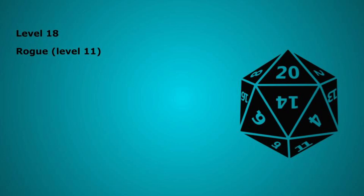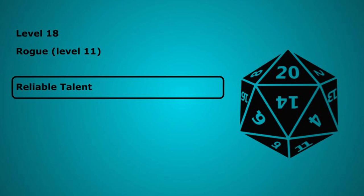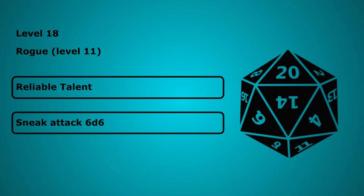Level 18 we take our 11th level in Rogue. Here we get the reliable talent feature letting you treat the roll of a 9 or lower as a 10 for any ability check you have proficiency with. 11th level Rogues also increase their sneak attack damage to 6d6.